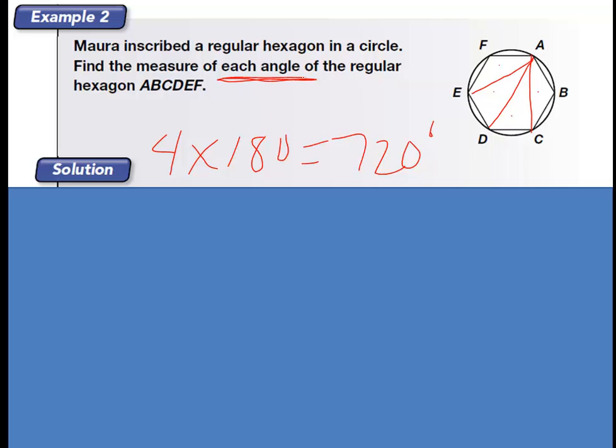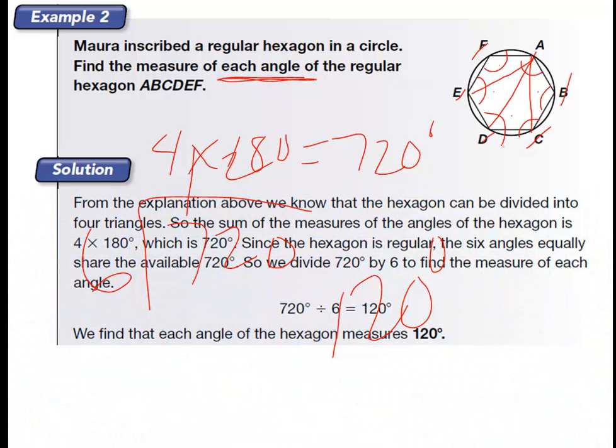But it doesn't want to know the sum. It's asked for each angle. Well, how many angles are there total? Well there's one, two, three, four, five, six. So you take your 720 total and divide it by six, and what you come up with is 120, 120 degrees. Each one of these is 120 degrees. Hopefully that makes sense.